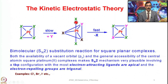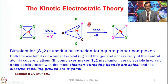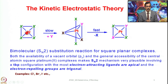This is very important: when explaining trans effect using kinetic electrostatic theory, we must gauge and analyze the nature of the ligands present on the metal before we form a trigonal bipyramidal geometry — electron-attracting ligand pairs are apical and electron-repelling groups are trigonal planar. So if we have two negative ligands trans to each other, they are electron-repelling groups and will be in the trigonal plane.